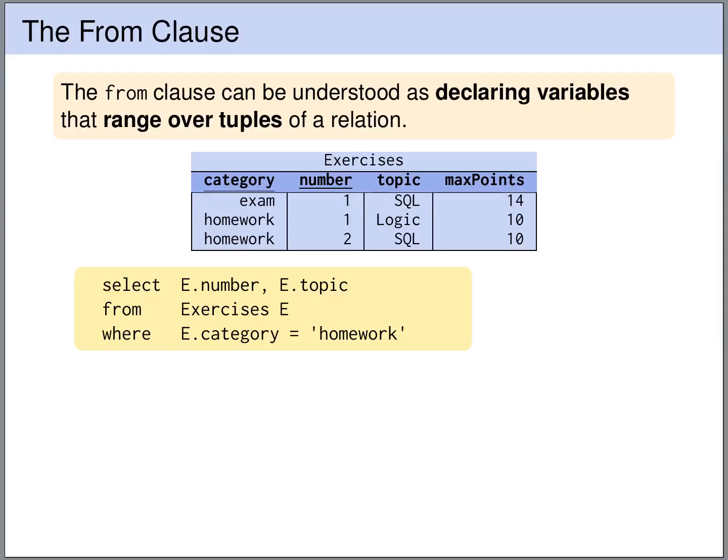The FROM clause of an SQL query can be understood as declaring tuple variables. So here in the FROM clause we say that we want to query the table exercises. And we give as a name for the variable we give the name E. So E is a variable that iterates over the rows of the table. So in each step E will be assigned one of the rows of the table exercises.